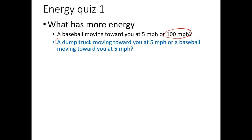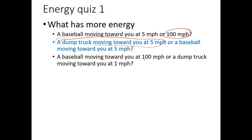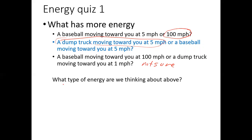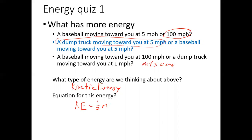The dump truck does. What has more energy, a baseball moving at you at 100 miles an hour or a dump truck at one mile per hour? That's harder to answer because the baseball has the higher speed, but the dump truck has the greater mass, so we can't be sure. The kind of energy we're thinking about is kinetic energy, and the equation is on your equation sheet: one half m v squared.